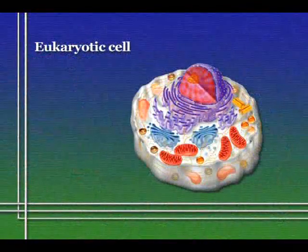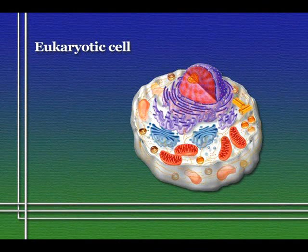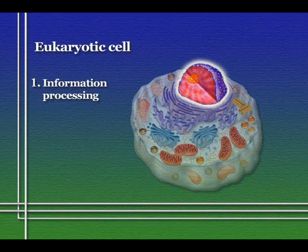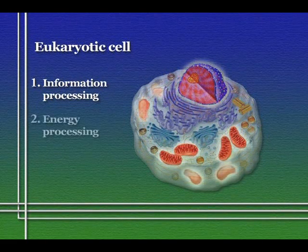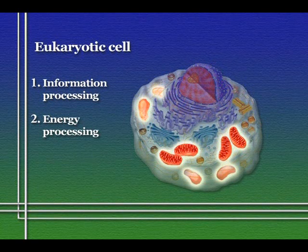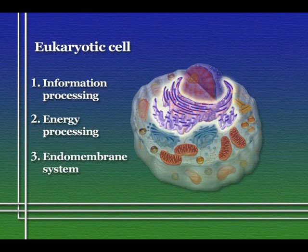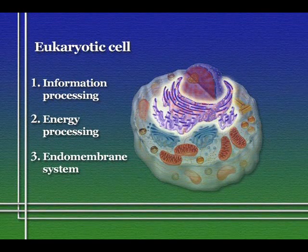The internal packages or compartments of a eukaryotic cell are something we could spend a lot of time listing, but I want to draw this more broadly and point out that there are really three main types of internal packages in eukaryotic cells. First, some are specifically devoted to information storage and processing. Second, some are devoted to processing and storing energy. Third, there's a set devoted to transporting and packaging biochemical products and reactions — that third set is commonly called the endomembrane system, and we'll talk about that last.